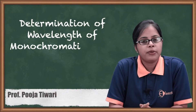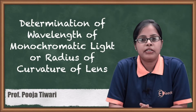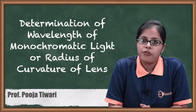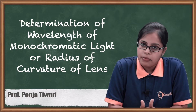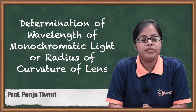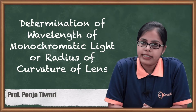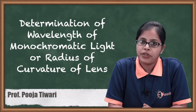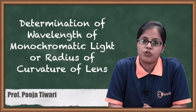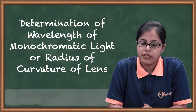Hello friends. Today we are going to talk about the method of calculation of wavelength of monochromatic light, as well as the method for calculating the radius of curvature of a lens, which is used by Newton's rings method.